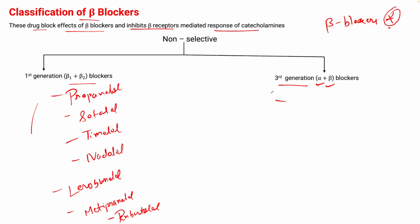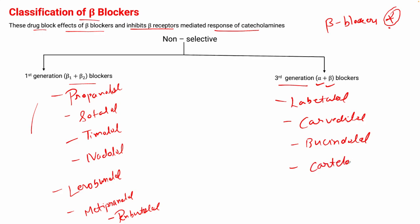If we talk about the third generation beta blockers, these are non-selective and include labetalol, carvedilol, bucindolol, carteolol, and medroxalol. These classifications are very important from both a theory and practical point of view, so do remember them.